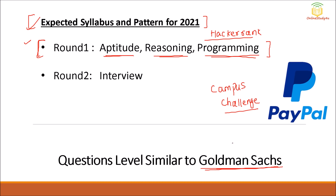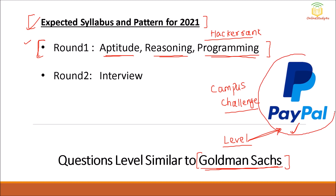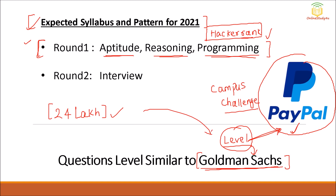Sometime back we had the Goldman Sachs examination, and the level of those questions will be very similar to what you will get in the PayPal examination. If you have already faced the Goldman Sachs exam, you already have an idea of what kind and level of questions to expect. I will also be making previous year PayPal questions available. The level will be similar to Goldman Sachs, and HackerRank is the platform most companies use. The package for PayPal is approximately 24 lakhs, so definitely the level will be very high — that is why I am comparing it with Goldman Sachs.